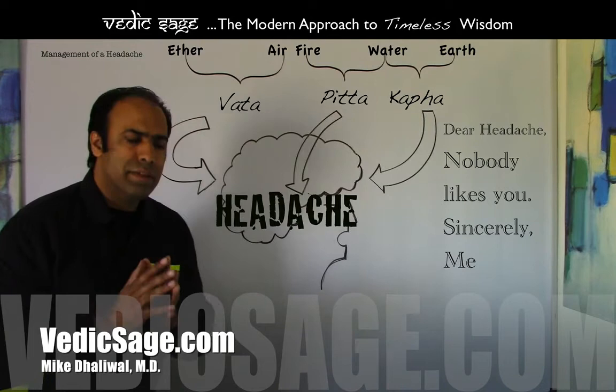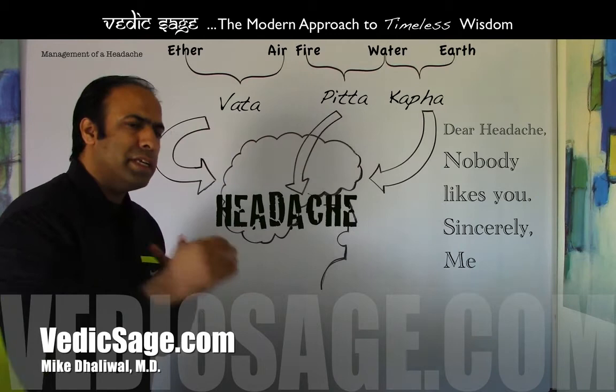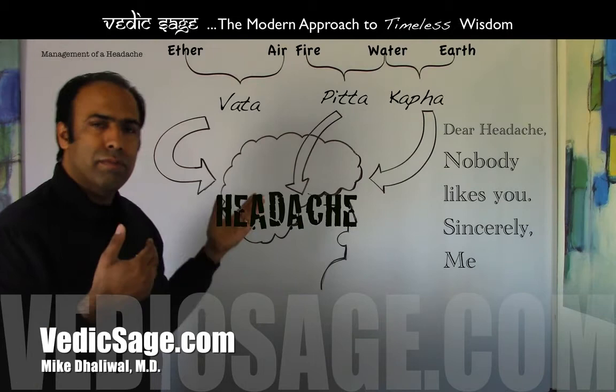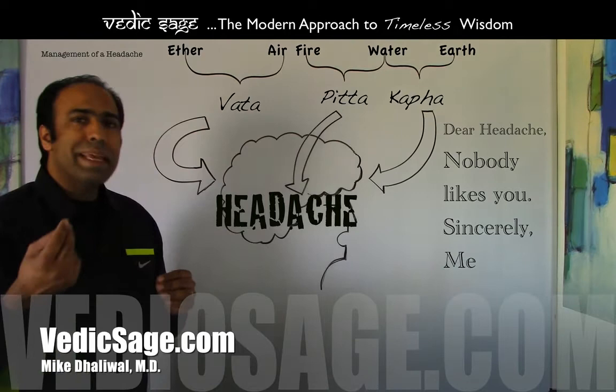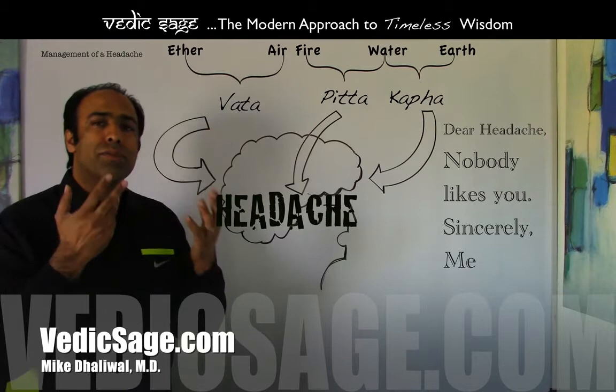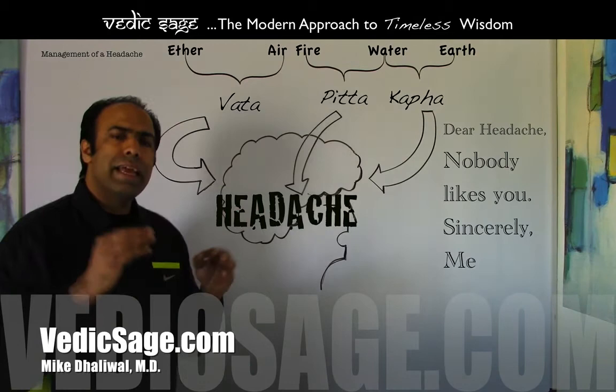Therefore, the management of a headache from an Ayurvedic perspective is first to address the acute symptoms and then provide long-term management in order to stabilize or balance the dosha and therefore prevent the recurrence of a headache. For the acute initial state of a vata type headache, you would want to consider certain elements such as essential oils or paste. Also, we can consider nasya, which is a medicated oil that's introduced into the nasal passage and therefore stimulates the olfactory bulb or the first cranial nerve and therefore directly stimulates the central nervous system.